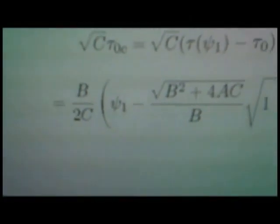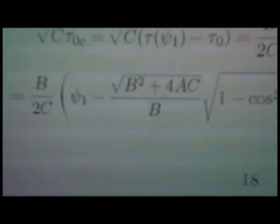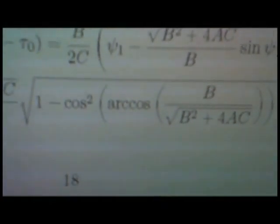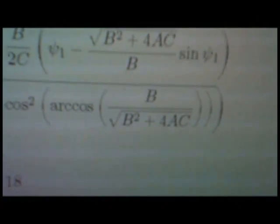And that's equal to b over 2c times in brackets psi 1 minus square root b squared plus 4ac over b times the square root of 1 minus cosinus squared of arcus cosinus b over square root b squared plus 4ac.